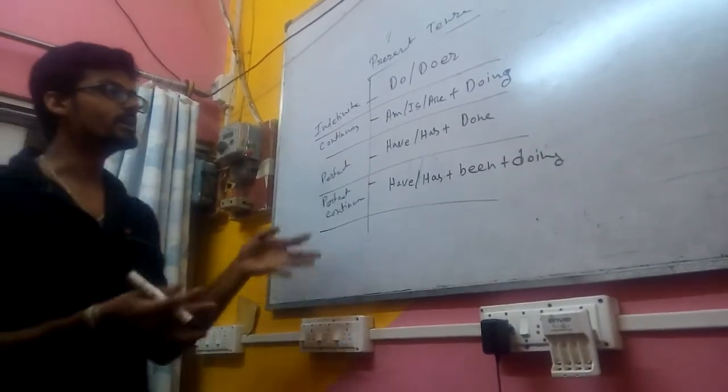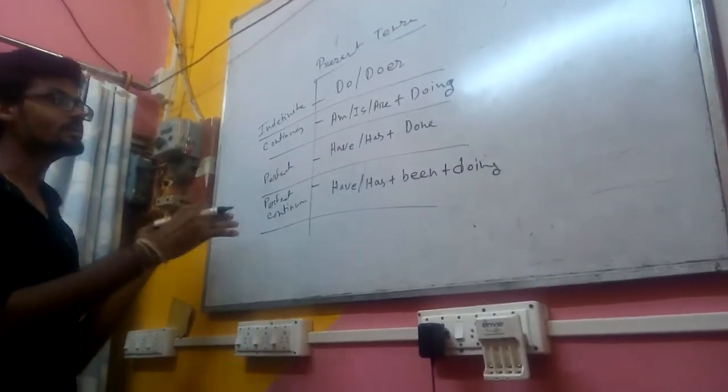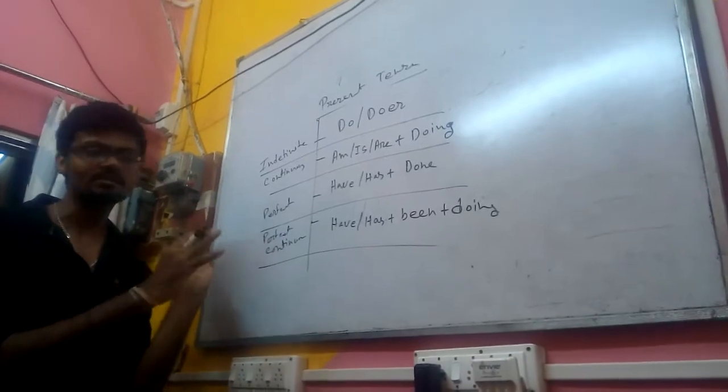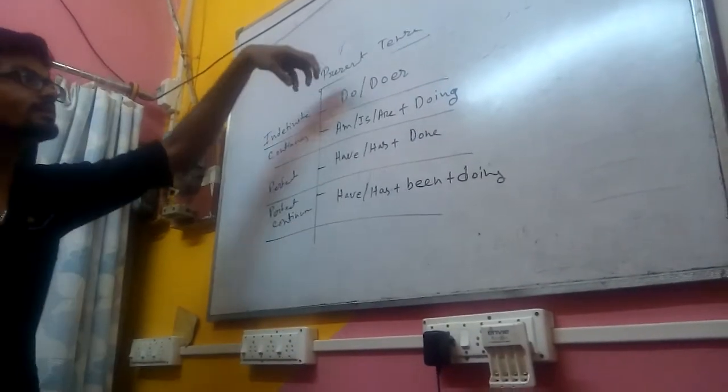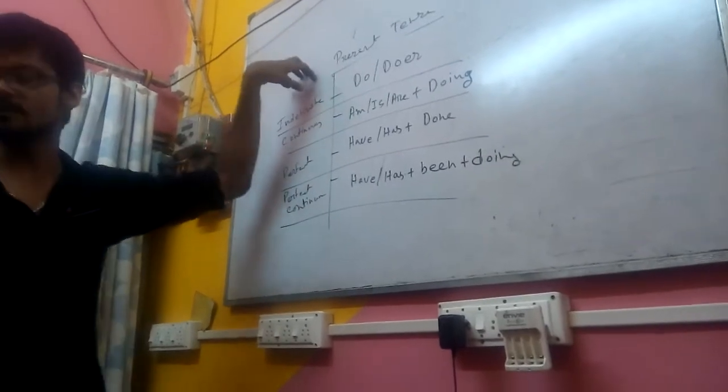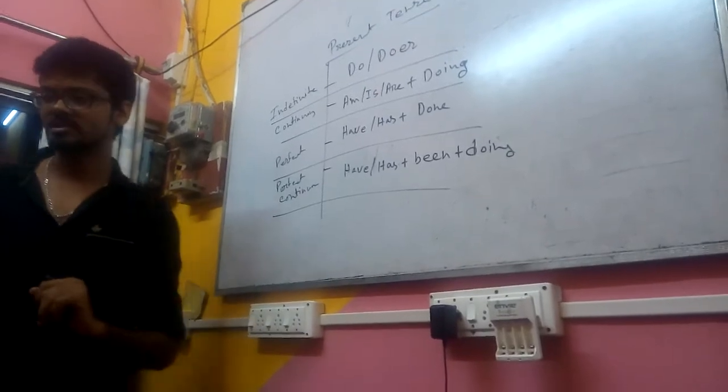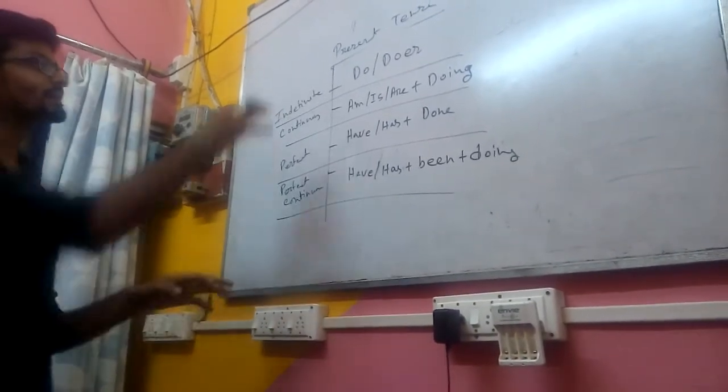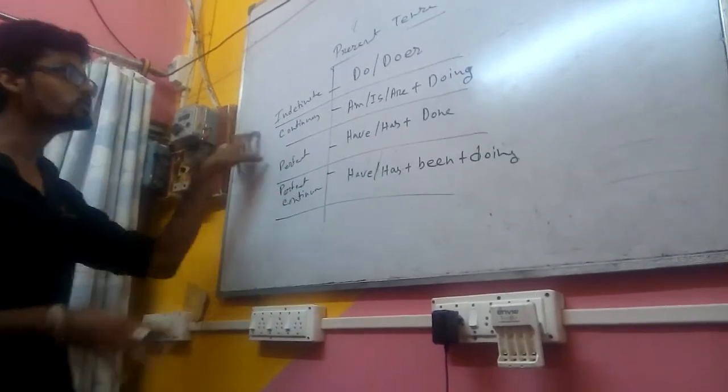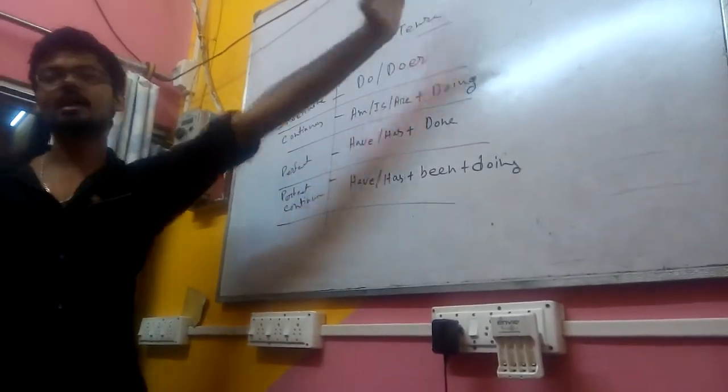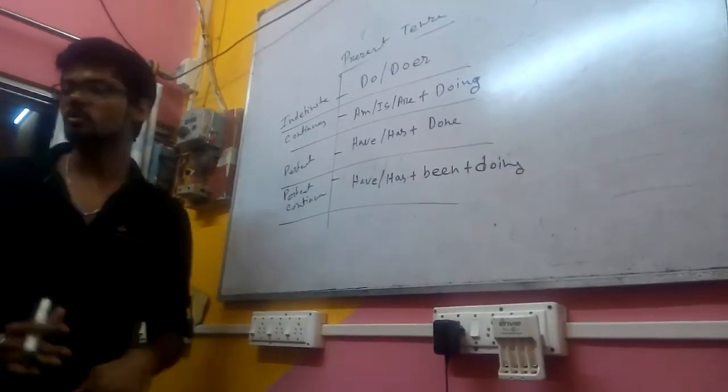If we place WH words in front of the auxiliary, it becomes a WH question. When we just move the auxiliary in front of the subject, it's a yes/no question. But if we place a WH word, then auxiliary verb, then subject, then other elements, it changes into a WH question.